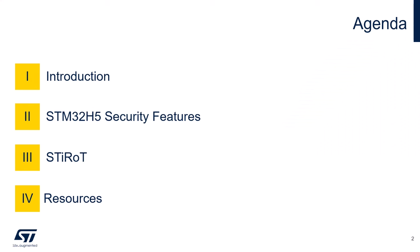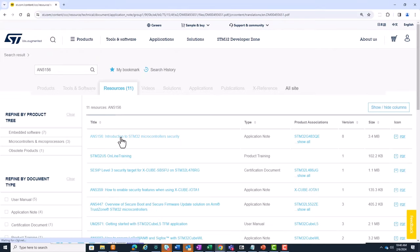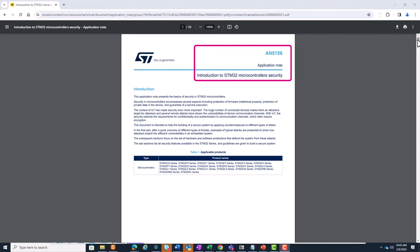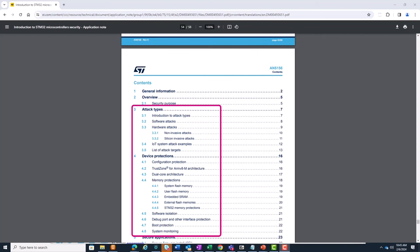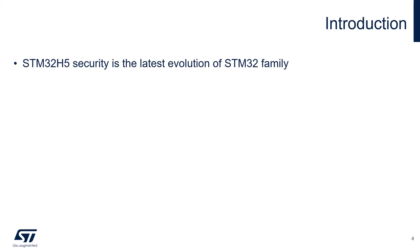We are not going to cover all the security features of the STM32H5, also because you might be already familiar with the basics of security in our STM32 microcontrollers. But if not, the AN5156 provides a very good summary of possible attacks and device protections for the different STM32 families. You can find a link to this application note and additional material in the resources section of this presentation. What we are covering in this presentation is an overview of the new security features introduced with the STM32H5.